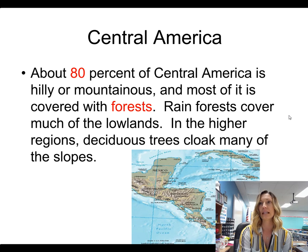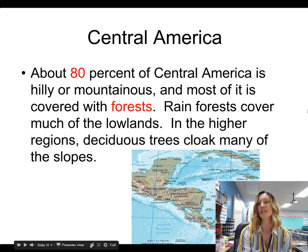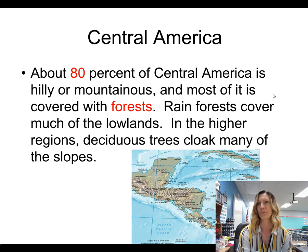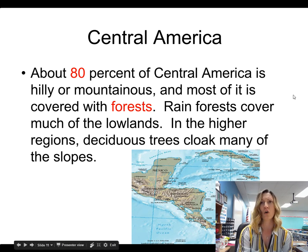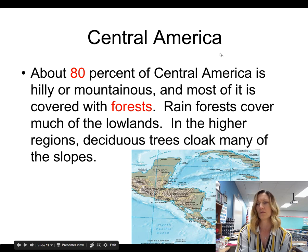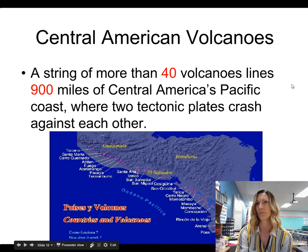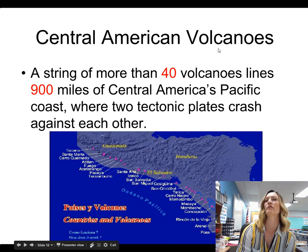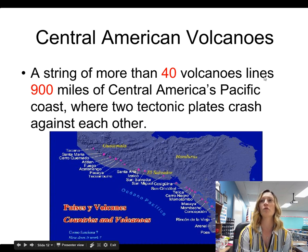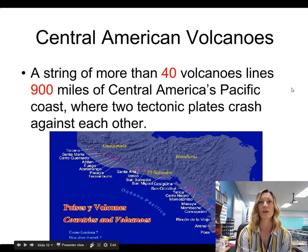Deciduous trees are trees that remain green all year round, regardless of the type of weather. Central American volcanoes: a string of more than 40 volcanoes lie along 900 miles of Central America's Pacific coast, where two tectonic plates crash against each other.